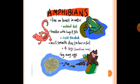Amphibians live on land and in water and they have webbed feet. They breathe with both lungs and gills. They are cold-blooded animals, have moist smooth skin, and have no hair or fur. They have four legs and lay many eggs.